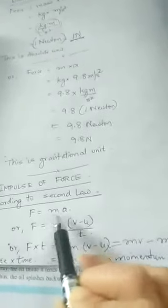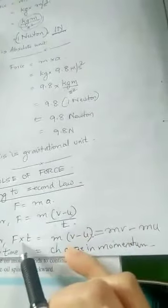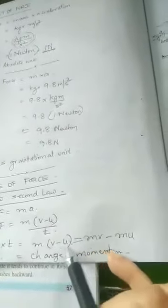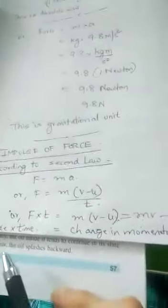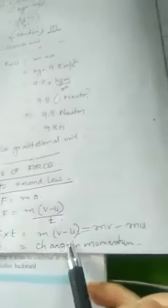Now let us look into something called the impulse of force. According to the second law, F equals MA, that is F equals M into (V minus U) divided by t. Multiplying both sides by t gives F into t equals M into (V minus U), which is MV minus MU — the change in momentum. If force is applied for a very, very short time, it is called the impulse. So impulse is force into time, which equals the change in momentum.